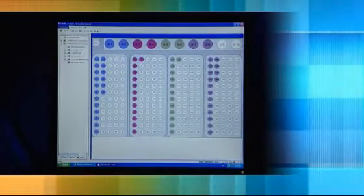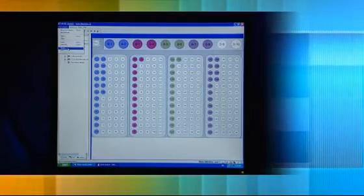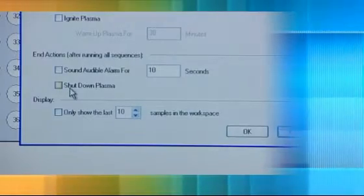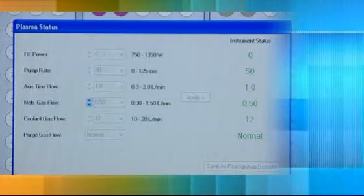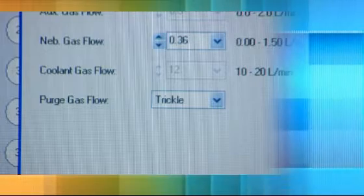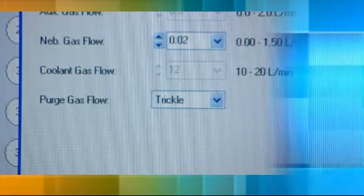Cost saving features come as standard with the ICAP 6000 and ITIVA. For example, the automatic plasma shutdown on completion of an analysis initiates nudge mode to save wear on pump tubing and sets the optics gas purge to a low trickle flow rate to save gas.